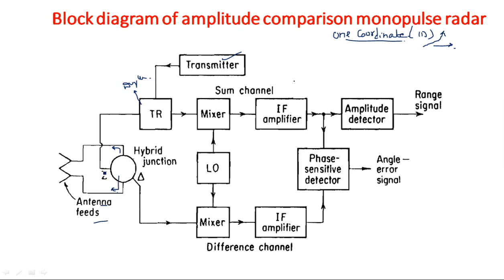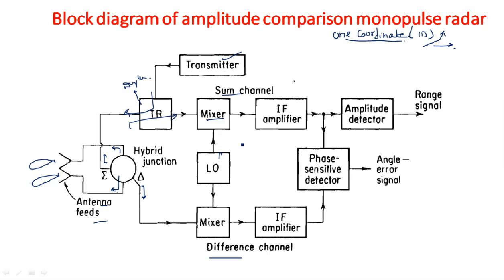The signal is radiated into free space. Depending on the resultant signal, it is sent back into two channels: the sum channel and the difference channel. The sum channel output goes to the duplexer - the purpose of the duplexer is to prevent the receiving signal from entering the transmitting section. The TR output is given to a mixer, which mixes the local oscillator signal to convert the incoming RF signal into an IF signal.